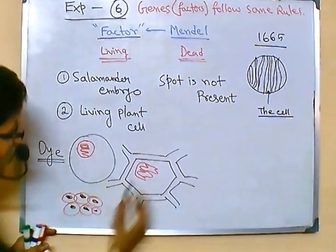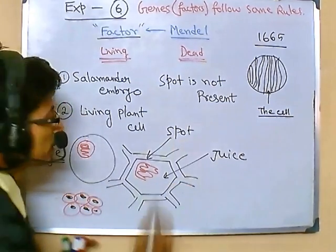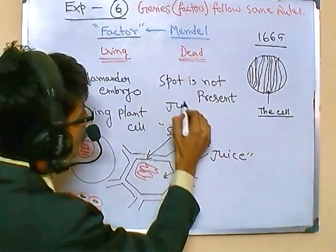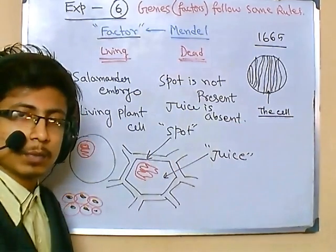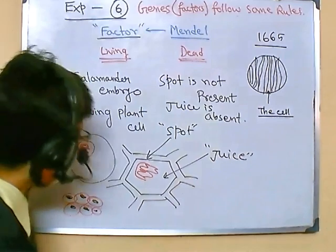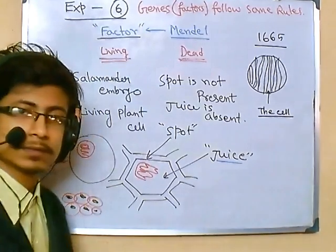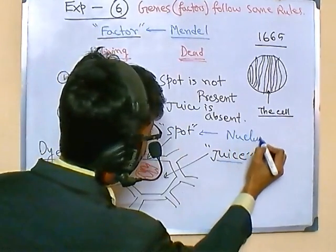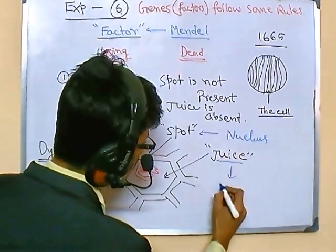Another thing Schwann found in all those living animal and plant cells was a liquid he called juice. So in the living cells they found the dark spot and the juice — these two things were very important. In the dead cells like cork, neither the spot nor the juice was found. Later, we named all those things: the dark spot is named nucleus, and the juice was later named cytoplasm.